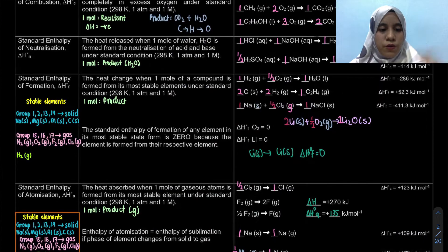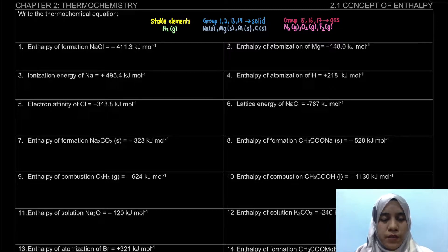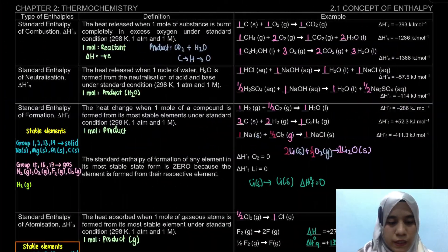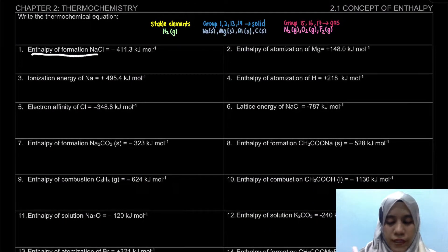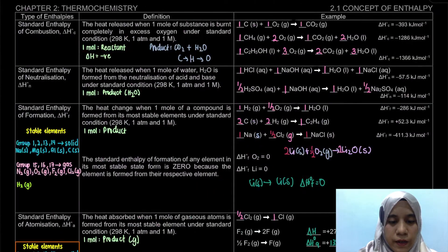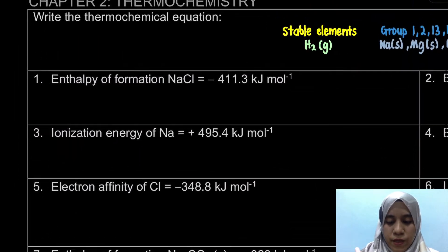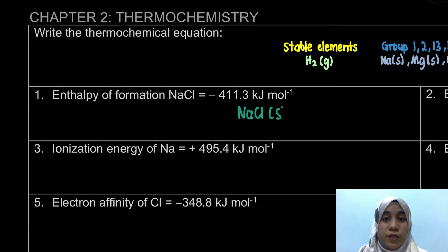Now we will do several exercises. Please note the stable elements listed here — these are written on page two. The first example is the enthalpy of formation of NaCl. Formation is the heat change when one mole of compound is formed from its most stable elements. So one mole must be the product — NaCl(s) is our product.